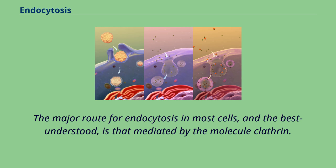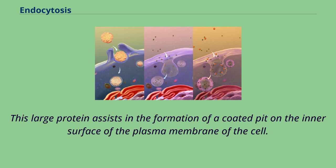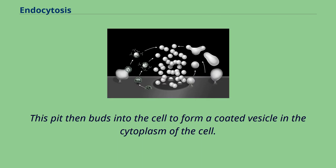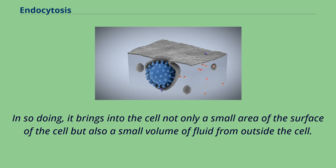The major route for endocytosis in most cells, and the best understood, is that mediated by the molecule clathrin. This large protein assists in the formation of a coated pit on the inner surface of the plasma membrane of the cell. This pit then buds into the cell to form a coated vesicle in the cytoplasm, bringing into the cell not only a small area of the surface of the cell but also a small volume of fluid from outside the cell.